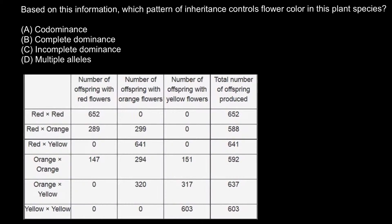Hello and welcome to Nikolai's genetics lessons. Here is a problem based on this information: which pattern of inheritance controls flower color in this plant species? The answer variants are: co-dominance, incomplete dominance, complete dominance, and multiple alleles.